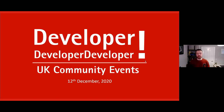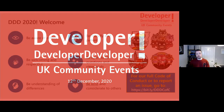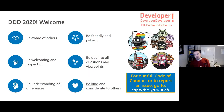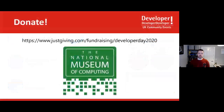I've just got a couple of slides. I'm going to run through some housekeeping bits first. Here's our code of conduct — it's pretty sensible stuff, but if we could all think about that, that's great. We also have the charity for this year's event: the National Museum of Computing. If you want to donate anything there, that would be much appreciated.